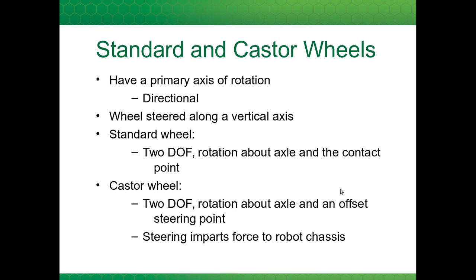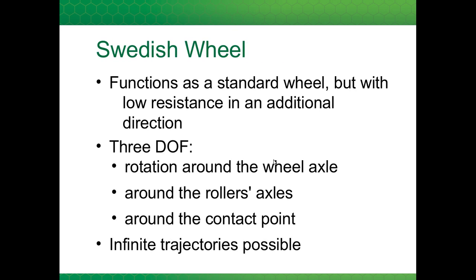Standard and caster wheels have a primary axis of rotation, which means they are directional. The wheel is steered along a vertical axis. The standard wheel has two degrees of freedom because you have two axes that you can rotate it about. If you steer it, you don't get any force on the robot because the wheel turns about a point on the steering axis. However, a caster wheel, if you steer it, is going to impart some force to the robot chassis. The Swedish wheel is like a standard wheel in that it's powered in the same manner — the motor goes around the horizontal axis — but it has low resistance in an additional direction: the direction that the rollers can turn in. The Swedish wheel has three degrees of freedom: it can rotate about the wheel axle, around the roller axles, and around the contact point with the ground.